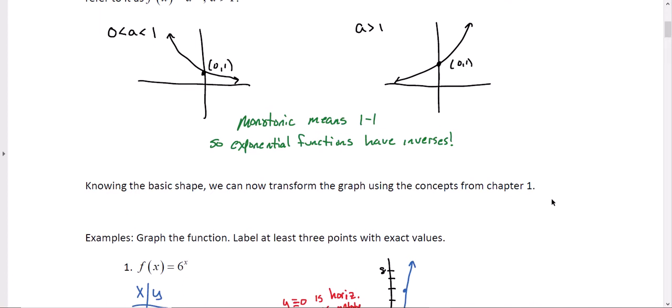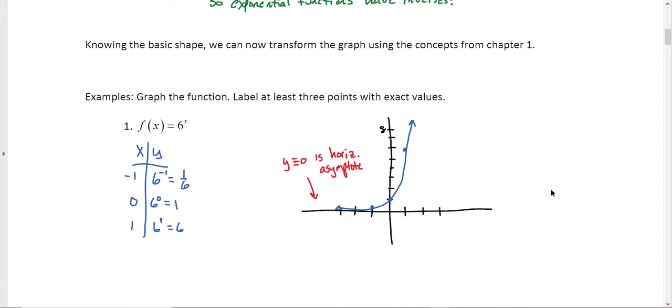So knowing this basic shape, we can now transform the graph using the concepts that we talked about earlier. Let's graph a couple of functions. First, f(x) = 6^x. The easiest thing to do with just a basic exponential function, since you get to choose the input, the domain values, we're going to take x values of -1, 0, and 1.